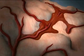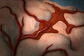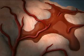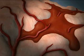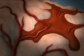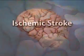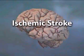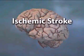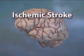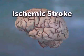Blood buildup increases pressure in the brain, damaging nerve cells and collapsing smaller vessels. The second type of stroke is ischemic stroke, which occurs when blood flow through a vessel is blocked.